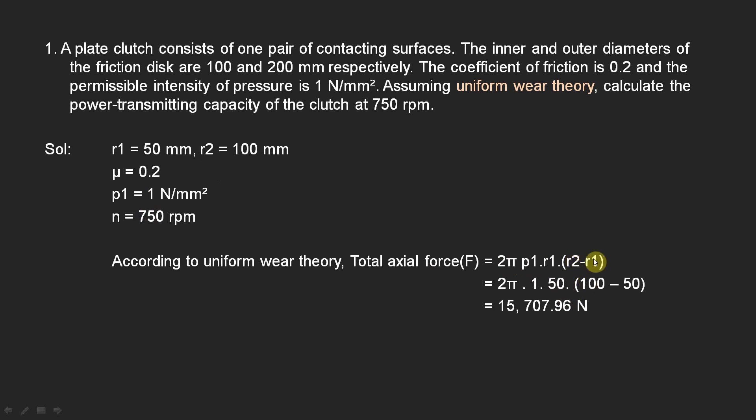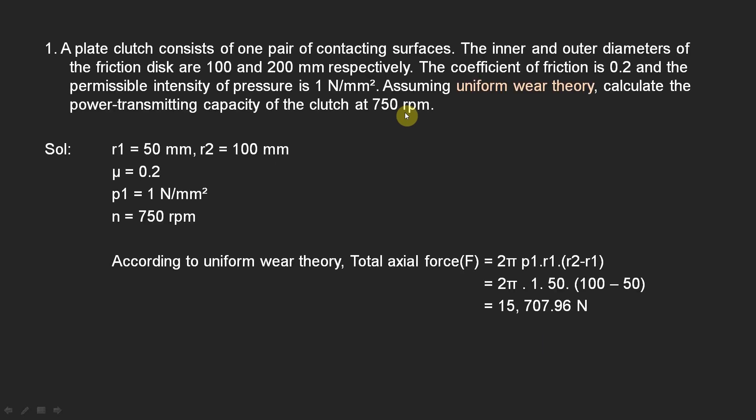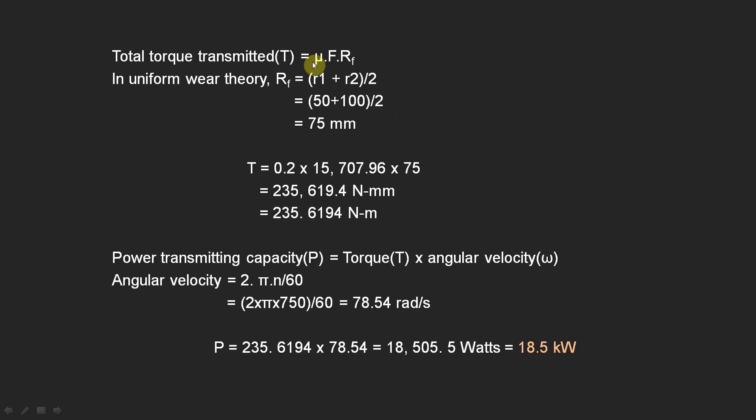We will get this value: 15,707.96 Newtons. Torque transmitted, the torque formula in uniform wear theory, is μ × F × rf, where F is the force and rf is the friction radius.